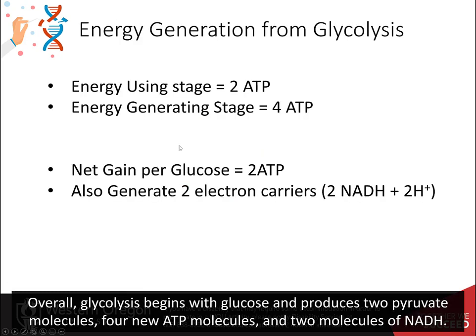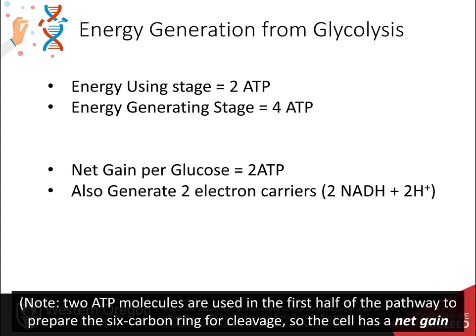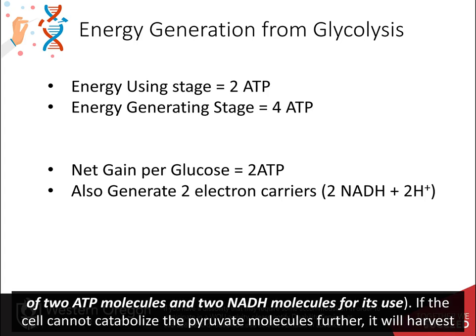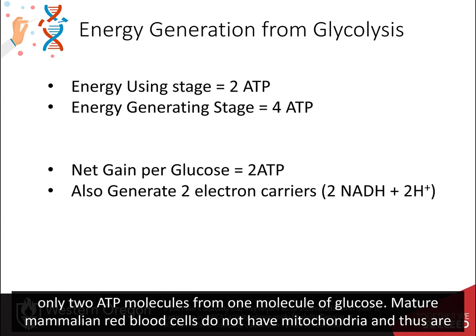Overall, glycolysis begins with glucose and produces 2 pyruvate molecules, 4 new ATP molecules, and 2 molecules of NADH. Note that 2 ATP molecules are used in the first half of the pathway to prepare the 6-carbon ring for cleavage. So the cell has a net gain of 2 ATP molecules and 2 NADH molecules for its use. If the cell cannot process the pyruvate molecules further, it will harvest only 2 ATP molecules from 1 molecule of glucose.